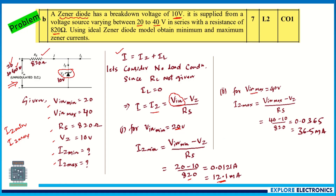For Vin maximum = 40 volts: (40 − 10) / 820 gives 36.5 milliamps as the maximum current flowing through the zener diode. So Vin minimum of 20 V gives 12.1 mA and Vin maximum of 40 V gives 36.5 mA. This problem carries seven marks; you need to write the circuit and mention the values.